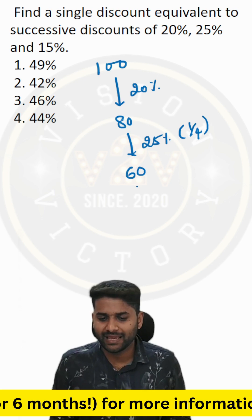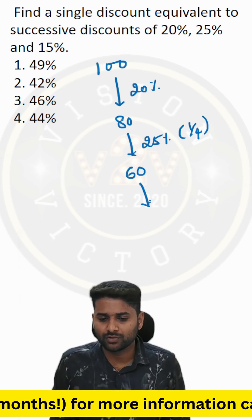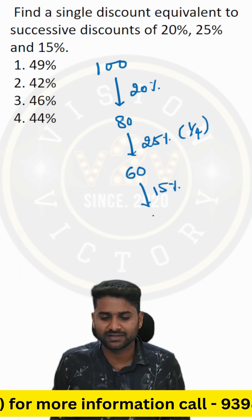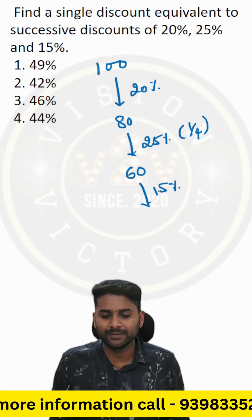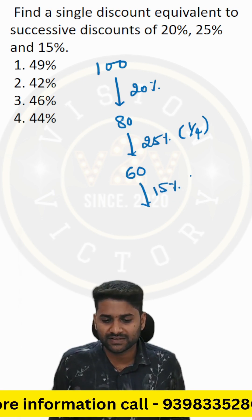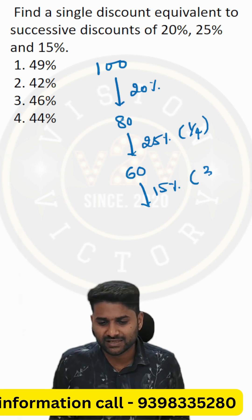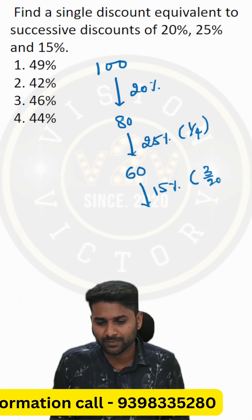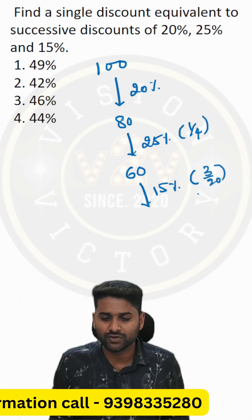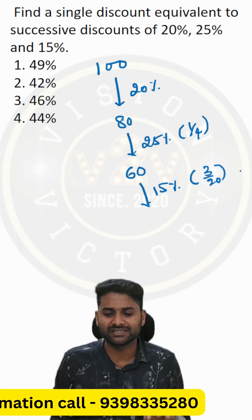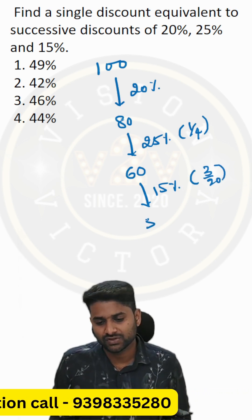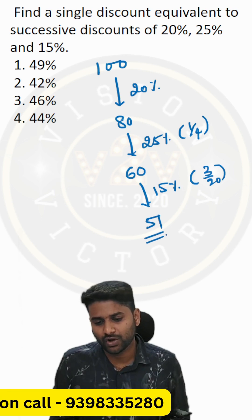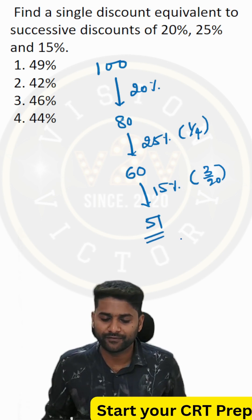But again there is one more discount of 15%. As you know, 15% of 60 is equal to 3/20th of 60, which is exactly 9 units. So finally you are going to pay 51.